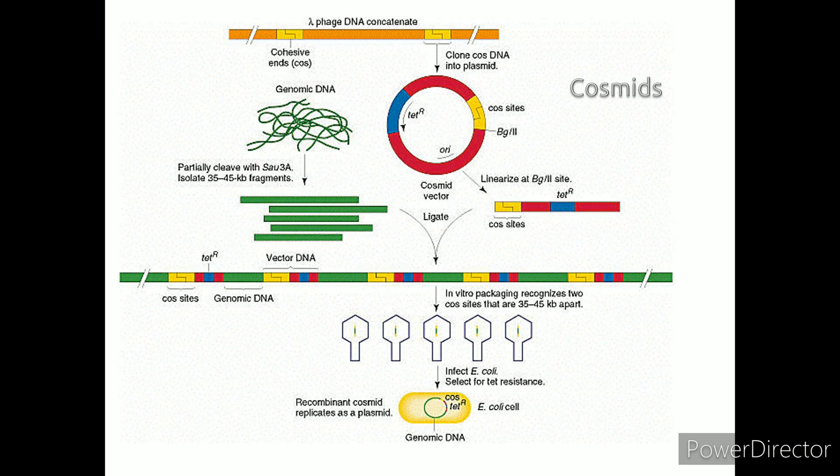Cosmids are hybrids of phages and plasmids that can carry DNA fragments up to 45 kb. They can replicate like plasmids but can be packaged like phage lambda.